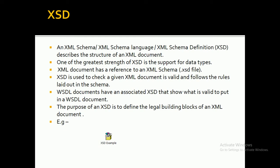An XML document needs to be connected with an XSD file. An XML document always has a reference to an XML schema or XSD file. One of the greatest strengths of XSD is the support for data types. XSD is used to check whether a given XML document is valid and follows the rules defined in the schema.